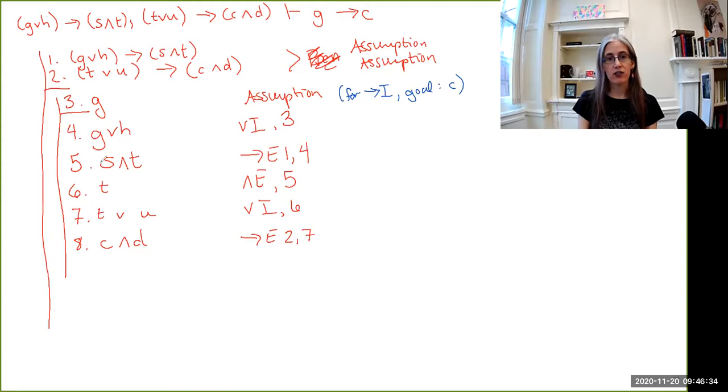And now again, just as we had at line five, we had a conjunction and we took one of the conjuncts out. Here we have a conjunction and we'll take one of the conjuncts out. So conjunction elimination on line eight. And would you look at that?